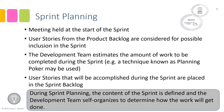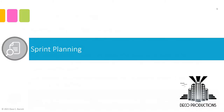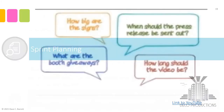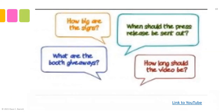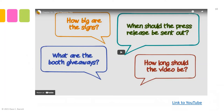Key idea: during sprint planning, the content of the sprint is defined and the development team self-organizes to determine how the work will get completed. Let's take a look at the sprint planning meeting and see what takes place — this is a key meeting that occurs at the start of the sprint.